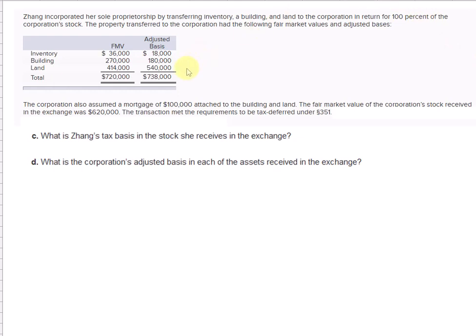That's the $738,000. So we take the adjusted basis, which becomes the substituted basis, less the mortgage assumed by the corporation.